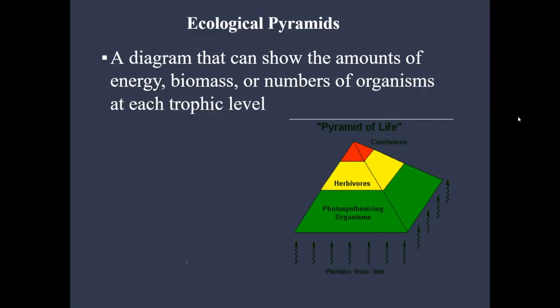We can also encompass trophic levels in pyramids. There are four ecological pyramids, and you can use them to represent energy, biomass, or numbers. We'll start with the basic pyramid of life, explaining what kind of organism is at each trophic level. Photons from the sun are outside the pyramid because they are not organisms. Then the photosynthesizing organisms are at the base, because they are in greater numbers. Above them are herbivores — fewer in number. And at the very top are carnivores — the least amount, taking the smallest space.